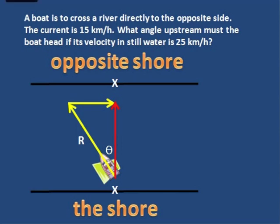The first thing we have to do is label each of these vectors. Now the easiest one is this one here, 15 kilometers per hour. That's how fast the water, the current is carrying the boat downstream.